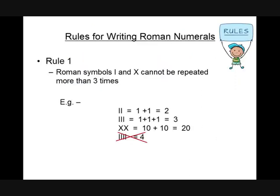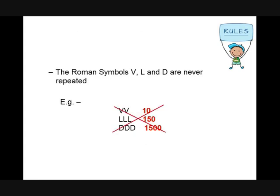Rule one: Roman symbols I and X cannot be repeated more than three times. When we have a Roman number with the same numeral repeated, we add them to find their Hindu-Arabic equivalent. For example, in the Roman system we can write two like this, three like this, and twenty like this, but we cannot write four like this. The Roman symbols V, L, and D are never repeated.